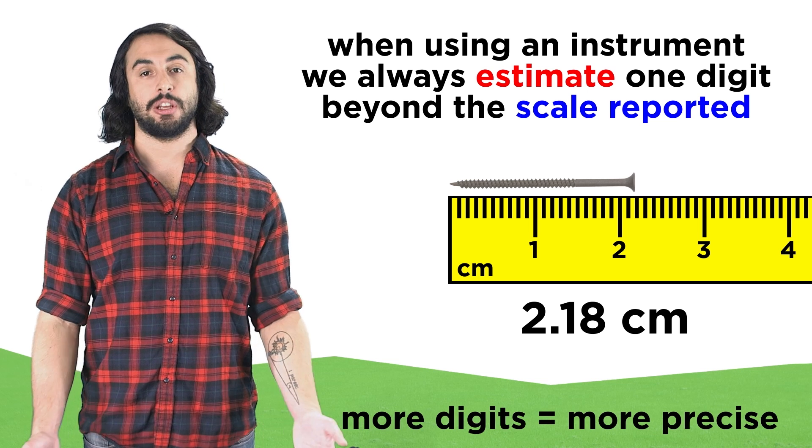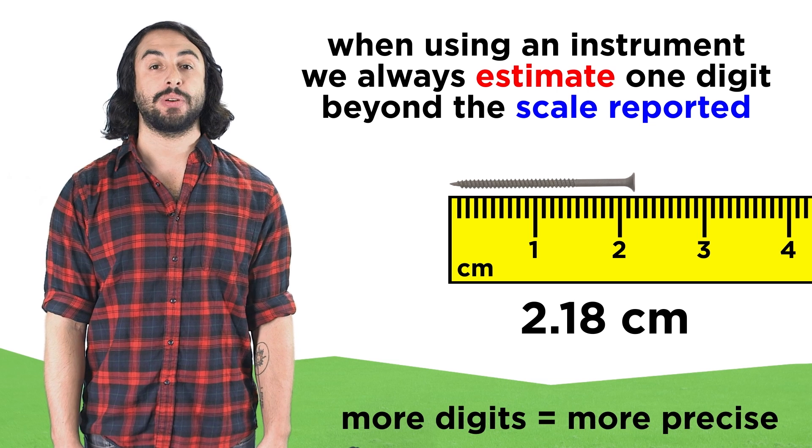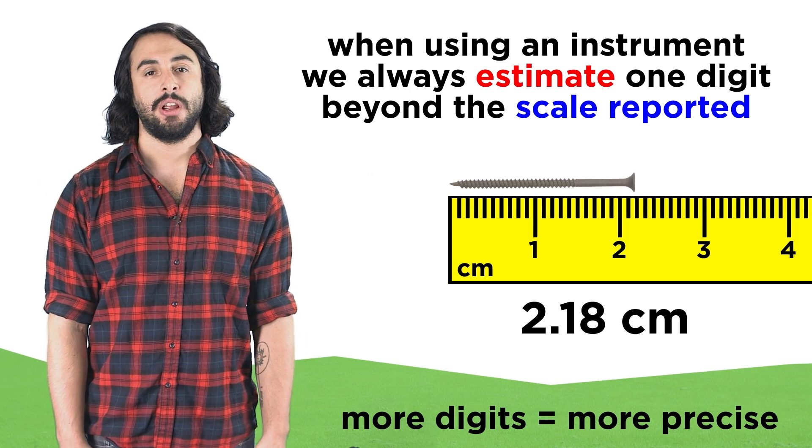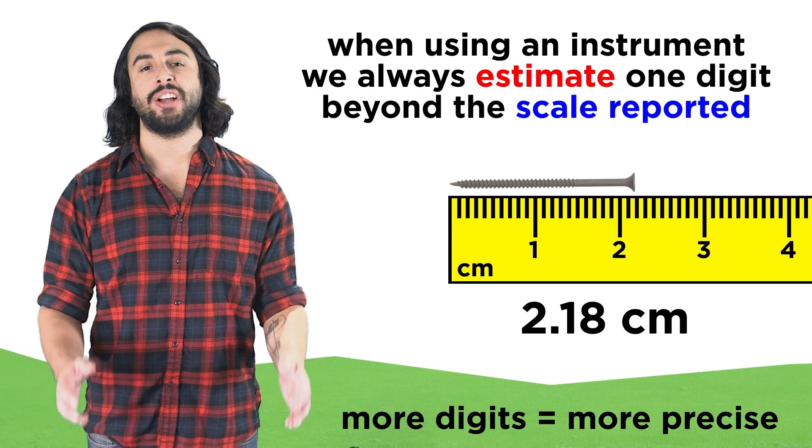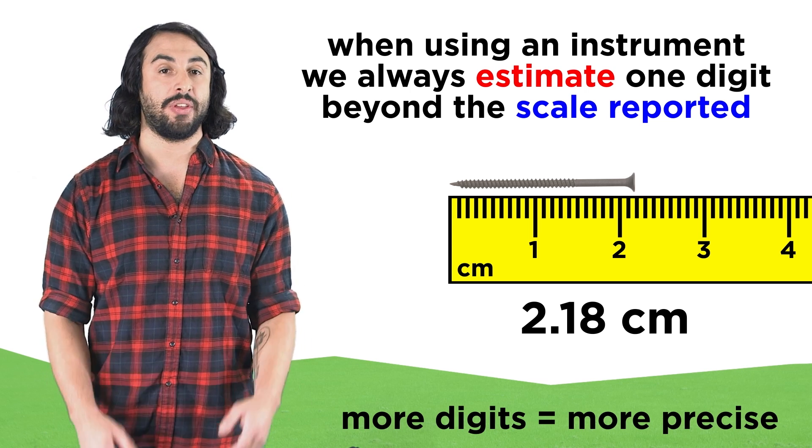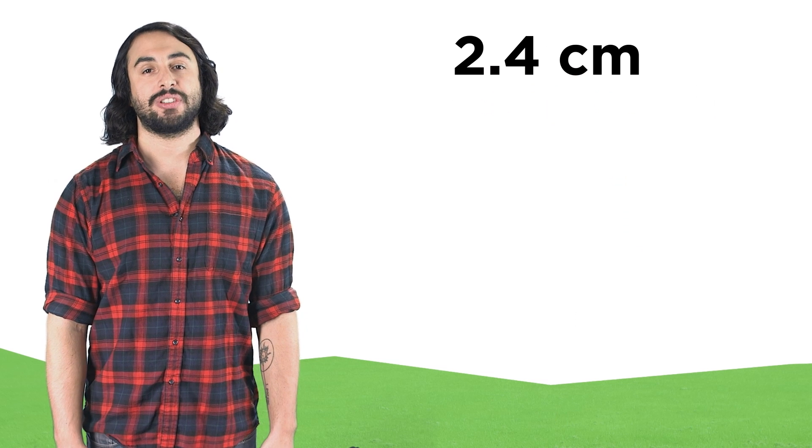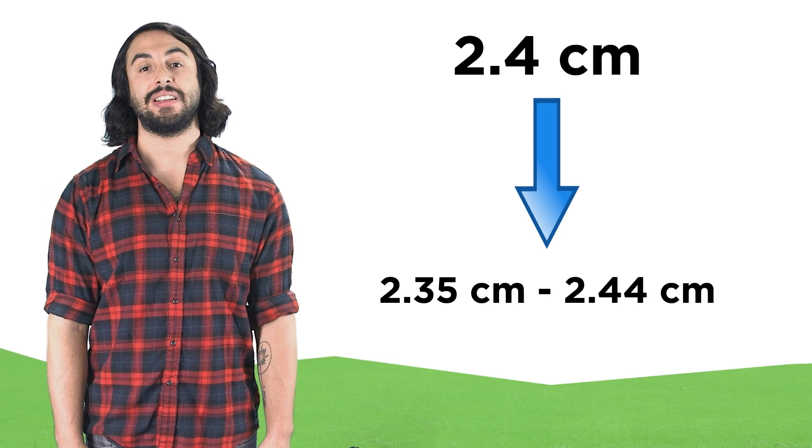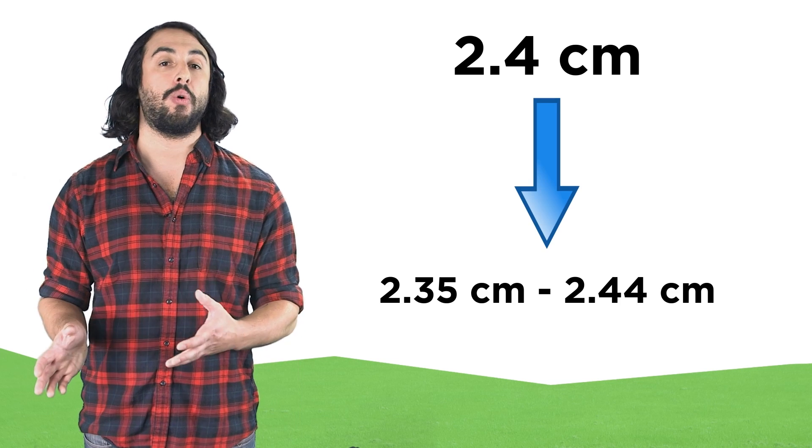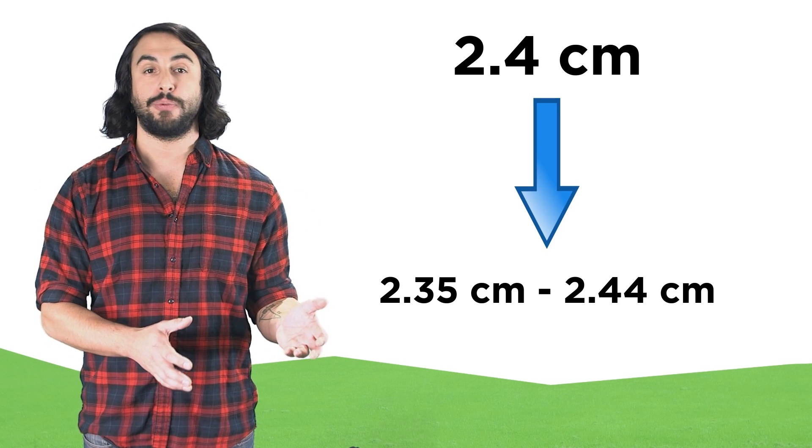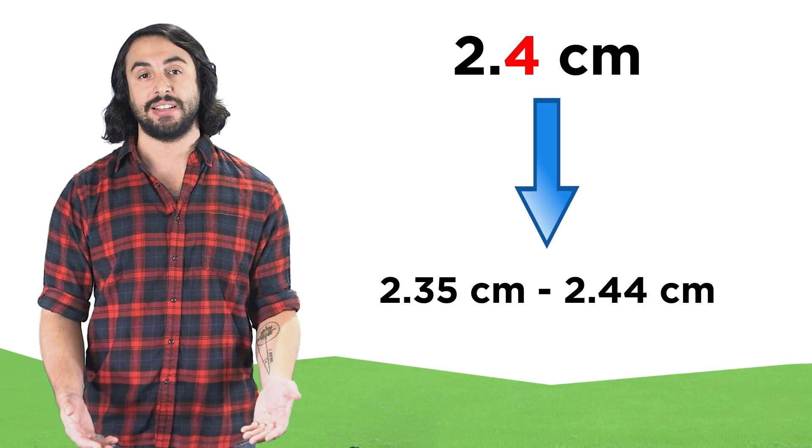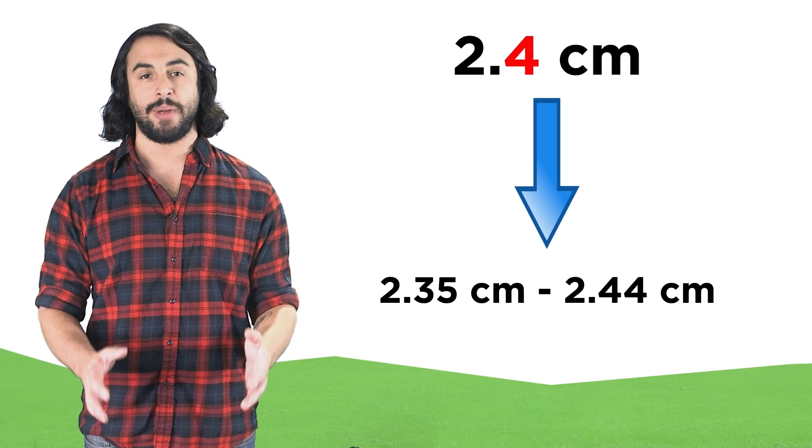The more digits there are in our measurement, the more precise it is. But no matter how precise our measurement, there will always be some uncertainty associated with it. If we measure something as being two point four centimeters, that means that it is really somewhere between two point three five and two point four four, which will round to two point four, since the tenths place limits the precision of our measurement.